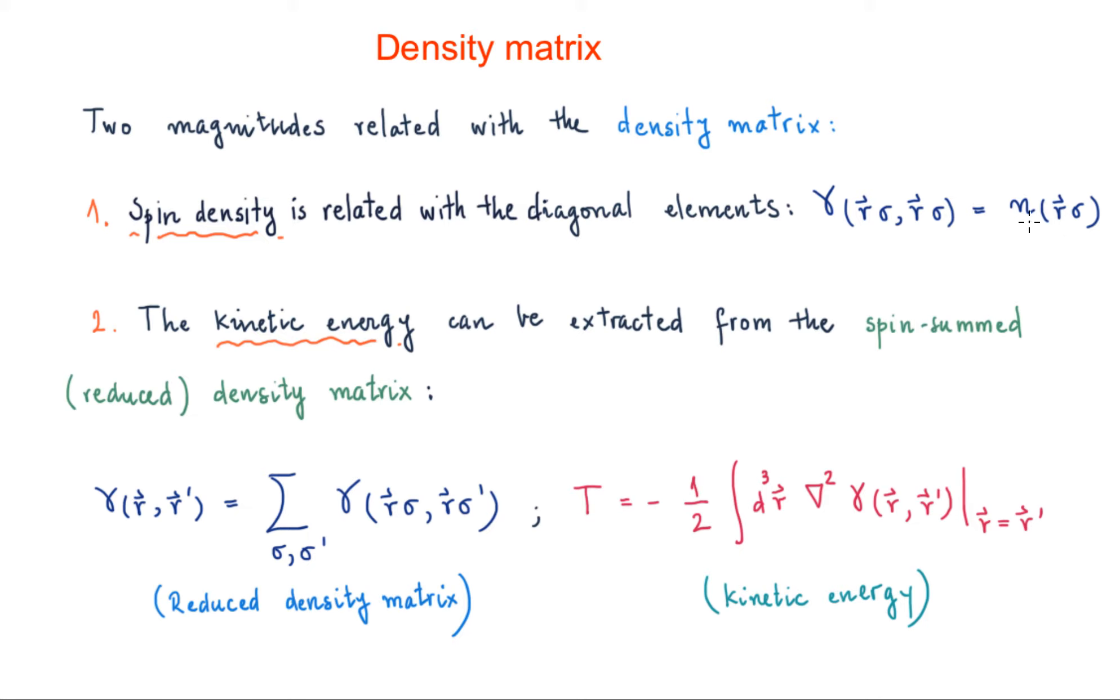On the other hand, we can see that the kinetic energy can also be extracted from the spin-summed, or also called reduced, density matrix. So first let's define the reduced density matrix. This is the density matrix, and if we sum over sigma and sigma prime, we are getting what's called the reduced density matrix.